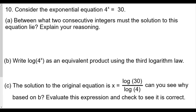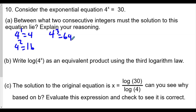Question number 10: consider the exponential equation 4^x = 30. Between which two consecutive integers must the solution lie, and explain your reasoning. Well, 4¹ = 4, 4² = 16, and 4³ = 64. Since 30 is between 16 and 64, the two consecutive integers must be 2 and 3.